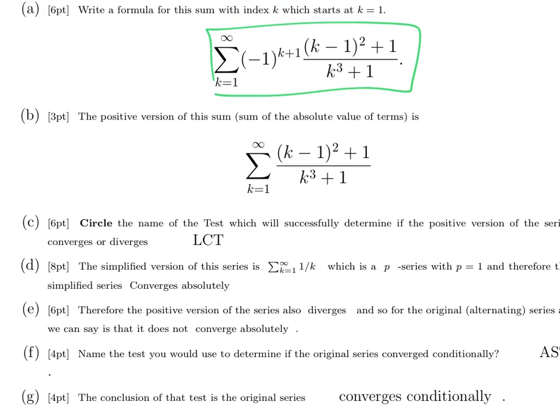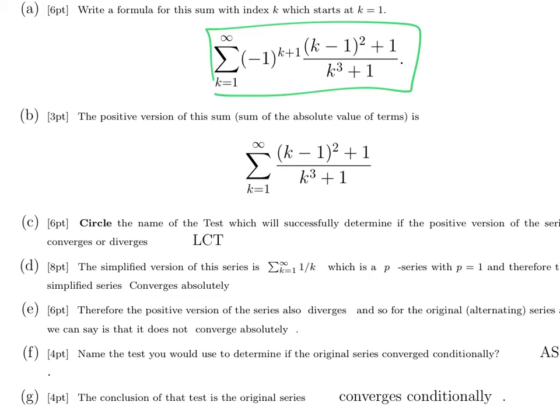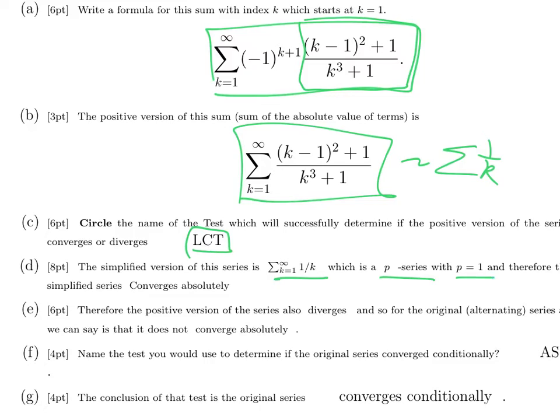The absolute value. Everything in here is positive or 0. Whenever k is 1 or bigger, except (-1)^(k+1), whose absolute value is 1. So here's the positive version. It is the limit comparison test is the one we want to use here. Because if you replace with this with its simplified version, you get k squared over k cubed, which is 1 over k. That's a p series with p equals 1.